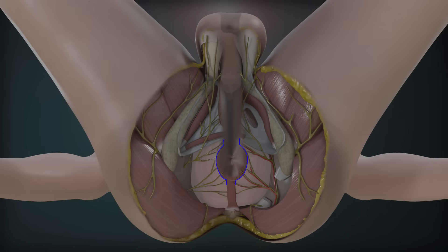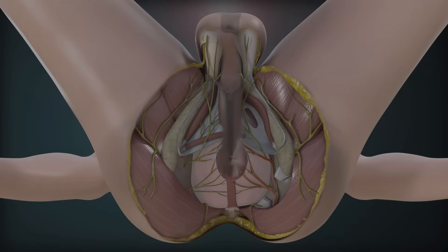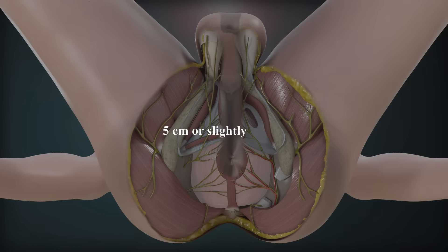The base of the fossa lies on the skin over the anal region of the perineum and the apex is directed upward and laterally. Each fossa measures about 5 cm in length, 5 cm in width, and 5 cm or slightly more in depth.